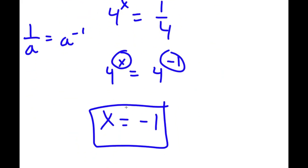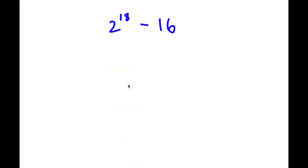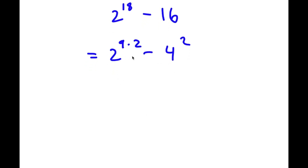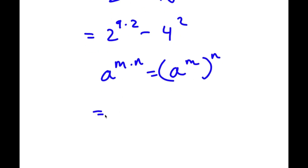In this problem, I have 2 to the power of 18 minus 16. To solve this, I'm going to first rewrite 2 to the power of 18 as 2 to the power of 9 times 2. So now I have 2 to the power of 9 times 2 minus 16, which I can rewrite as 4 to the power of 2. Using the rule a to the power of m times n equals a to the power of m to the power of n, I can rewrite 2 to the power of 9 times 2 as 2 to the power of 9 to the power of 2, giving me 2 to the power of 9 squared minus 4 squared.